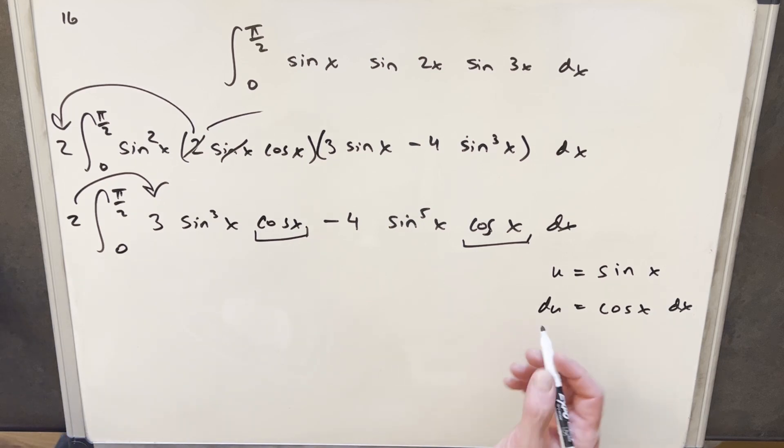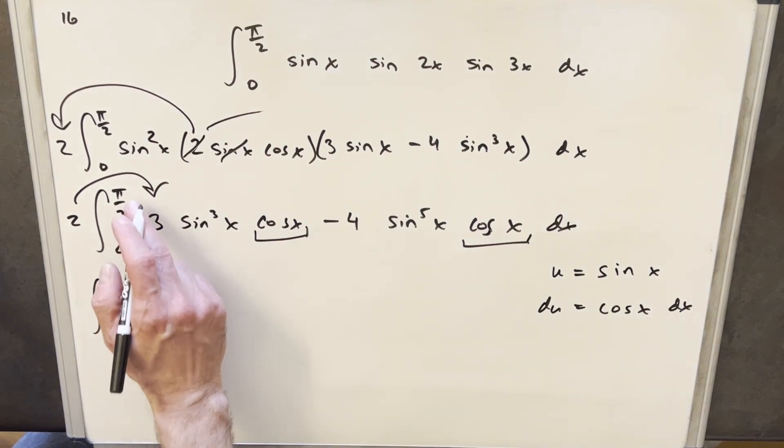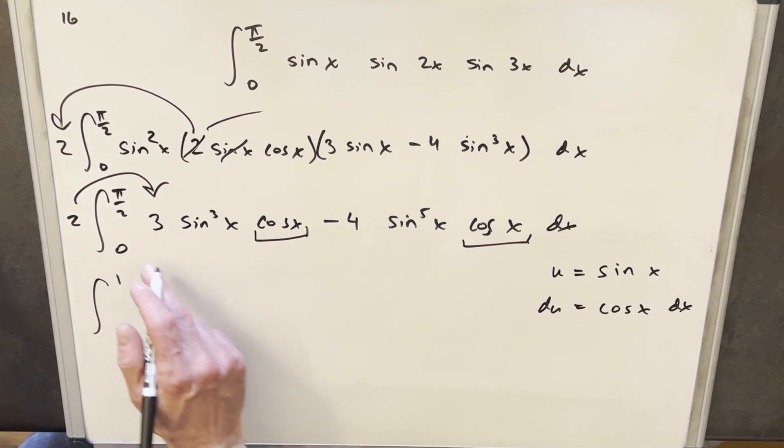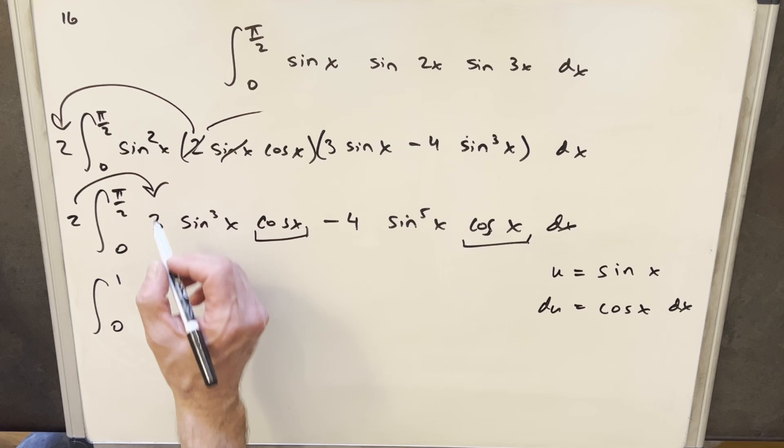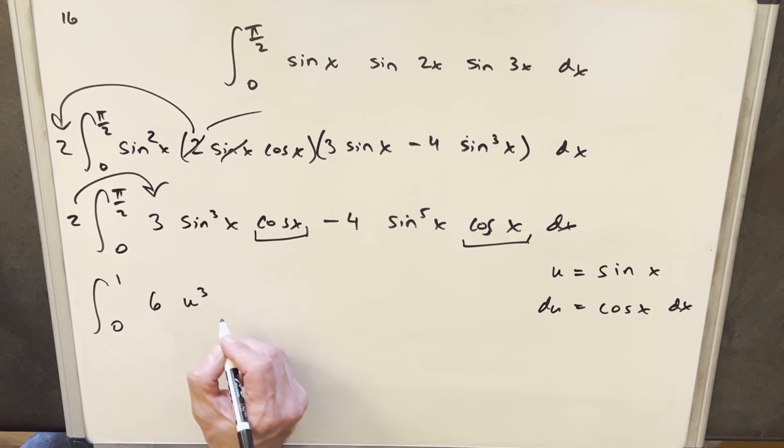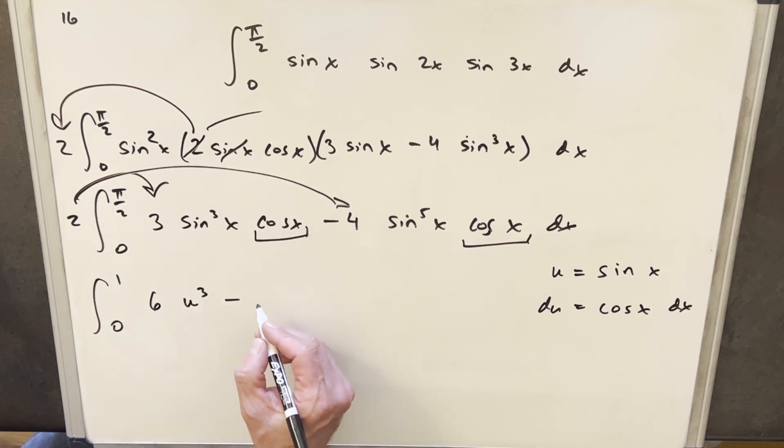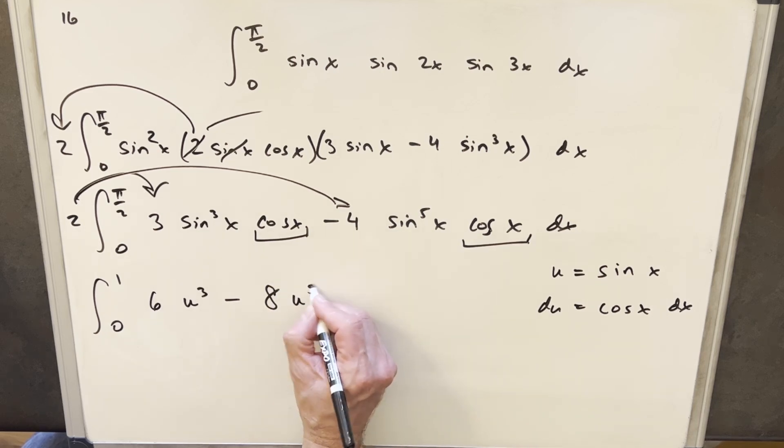So let's make this substitution and see how it goes. I'm going to update my bound first, we'll plug a pi over 2 in here, sine pi over 2 is 1, and then at 0, sine of 0 is just going to be 0. Then we'll multiply this 2 in here, so we're going to have 6, sine cubed is going to be u cubed. And then here we're going to again multiply the 2 to the minus 4, and we're going to have a minus 8, and the sine to the 5th is going to be u to the 5 du.